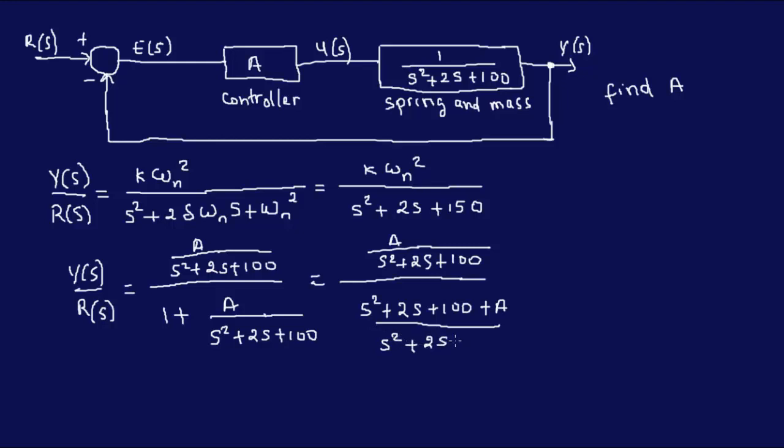And of course I can cancel these and I'm left with A over s squared plus 2s plus 100 plus A.